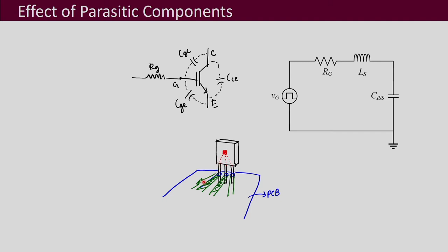We will have parasitic inductances associated with all of this, which is what we are writing as Ls. You can also recall that your input capacitance CISS was the sum of CGE plus the gate-to-collector capacitance CGC. If we had to draw this as an equivalent circuit...